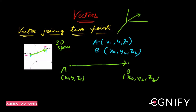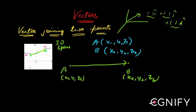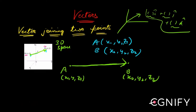Any vector in this 3D space has some i component, plus some j component, plus some k component. They can be zero or non-zero — that doesn't matter. Vector AB bar is also a vector, and we want to represent it in i-cap, j-cap, k-cap form. We've already seen the components of a vector, so that knowledge will be useful here.